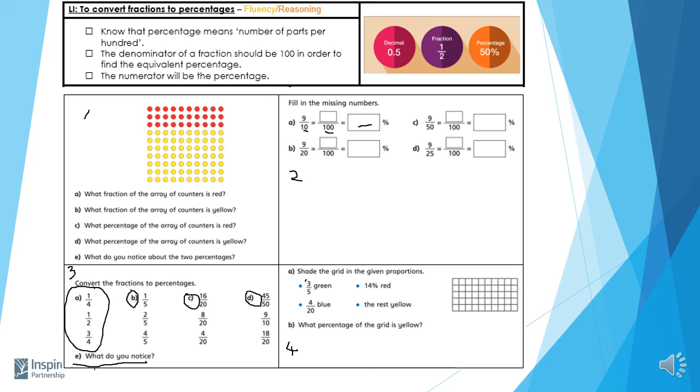And question number four, you need to shade the grid into the proportion shown. It says three fifths will be green. So you're going to need to work out how you are going to shade this grid, three parts of it in green. 14% red, 4/20 as blue and the rest yellow. And at the bottom, it's got a question which says, what percentage of the grid is yellow? Good luck and I'll see you on the Zoom meetings if there are any issues.